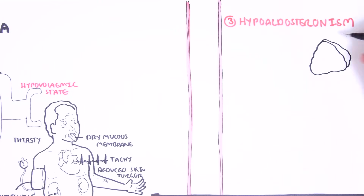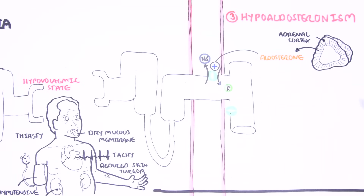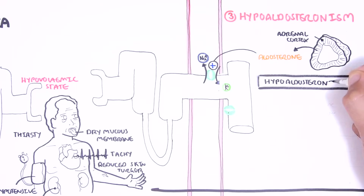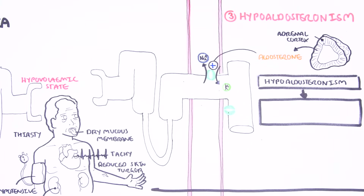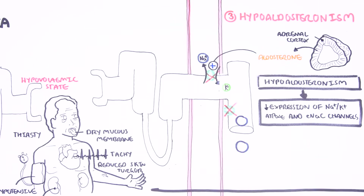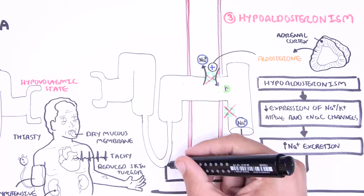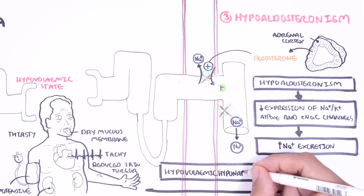Hypoaldosteronism can cause hypovolemic hyponatremia. Normally, the adrenal cortex produces and releases aldosterone, which works on the kidneys to reabsorb sodium in exchange for potassium. Causes of hypoaldosteronism include Addison's disease and spironolactone. Low aldosterone reduces expression of the sodium-potassium ATPase pump and aldosterone-dependent sodium channels. As a result, sodium cannot be retained, increasing sodium and water excretion — natriuresis and diuresis — resulting in hypovolemic hyponatremia.